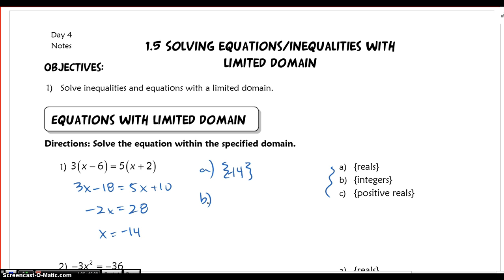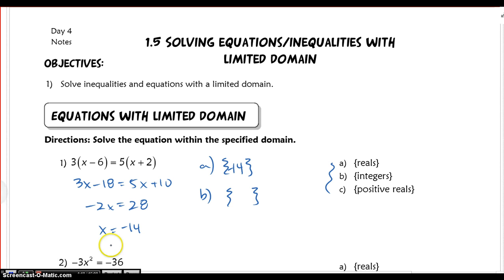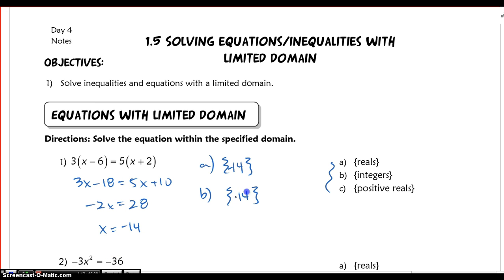Now part B says I only want integers. So again I make my brackets and say, is negative 14 an integer? It is, so it is also part of my solution. It does belong in the solution set.